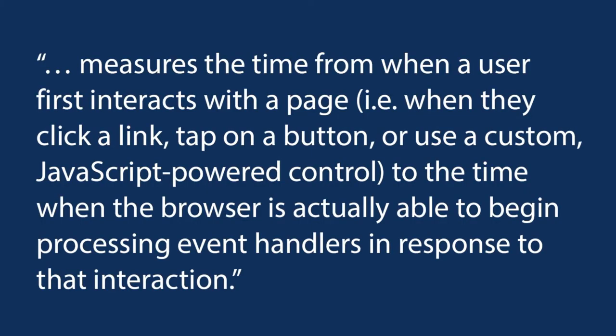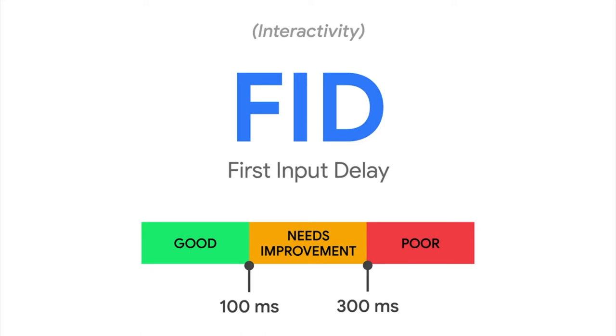First input delay, or FID, is the interactivity metric. This measures the time from when a user first interacts with a page — clicking a link, tapping a button, or using a JavaScript-powered control — to the time when the browser is actually able to begin processing event handlers in response to that interaction. Similar to LCP, this has a range of scores: anything less than 100 milliseconds is considered good, between 100 and 300 needs improvement, and everything over 300 milliseconds is considered poor. The most common culprit of slow first input delay is JavaScript. If you have a lot of JavaScript at the top maxing out the main thread, the browser can't respond to user input. Since FID can't be measured in the lab, total blocking time is considered a valid substitute when working with lab data.